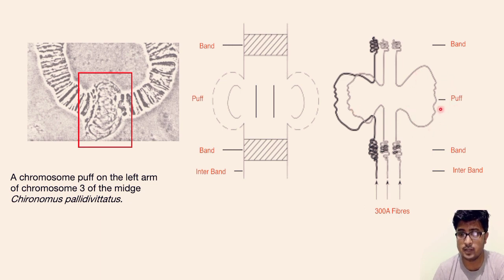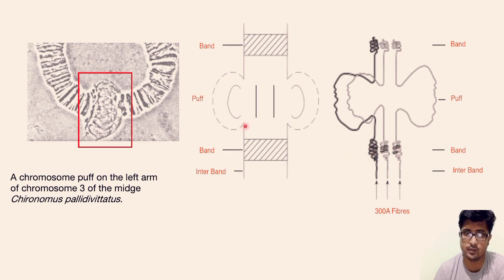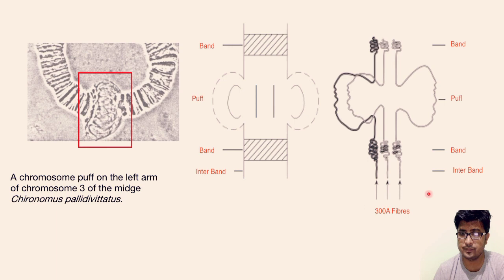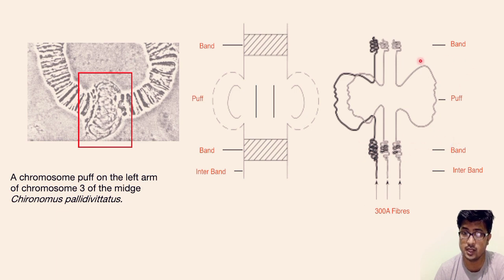These puffs are also called Balbiani rings, as they were discovered by scientist Balbiani. The dark bands are a 30nm highly condensed structure, which is why they appear dark under the microscope, whereas the lighter regions are not in this 30nm configuration, giving a whiter, less concentrated DNA appearance. The dark bands are heterochromatic regions and the puffs are euchromatic regions which are actively participating in transcription.